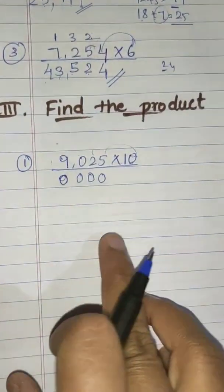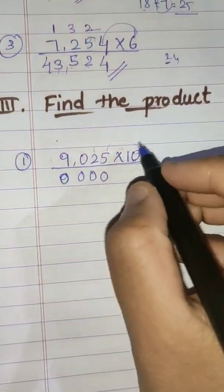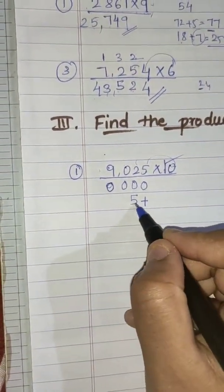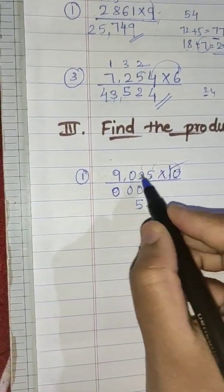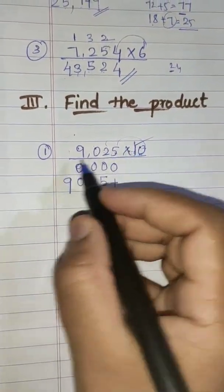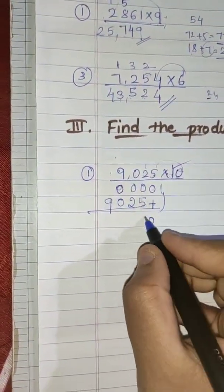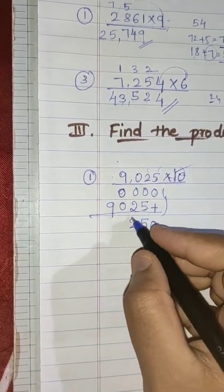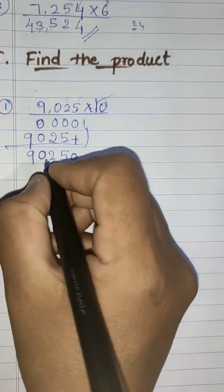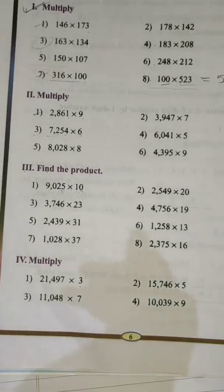This is one of the properties of multiplication — if you multiply any number by 0, the answer is 0 only. Now for the digit in the tens place: 1 five is 5, we start writing from the tens place. 1 two is 2, 1 zero is 0, 1 nine is 9. Now we do the addition: 0 plus 0 is 0, 0 plus 5 is 5, 0 plus 2 is 2, 0 plus 0 is 0, and 9. Our answer is 90,250.